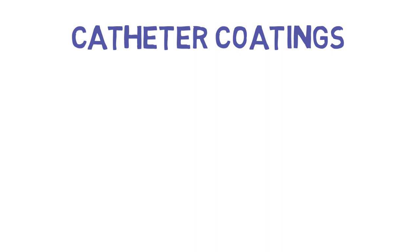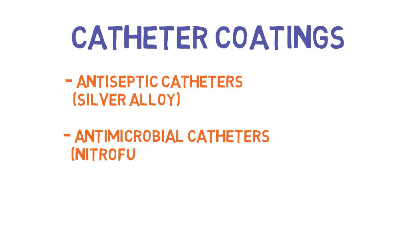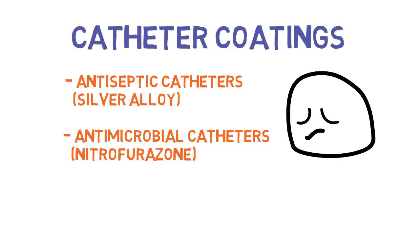Over the years, many people have tried to develop catheter coatings to decrease the risk of catheter-related urinary tract infections. The two main types are antiseptic catheters impregnated with a silver alloy, and antimicrobial catheters impregnated with antibiotics such as nitrofurazone. Despite many attempts, there is not good evidence to support the use of these special coatings. Patients often report that these catheters are more uncomfortable than traditional uncoated urinary catheters.